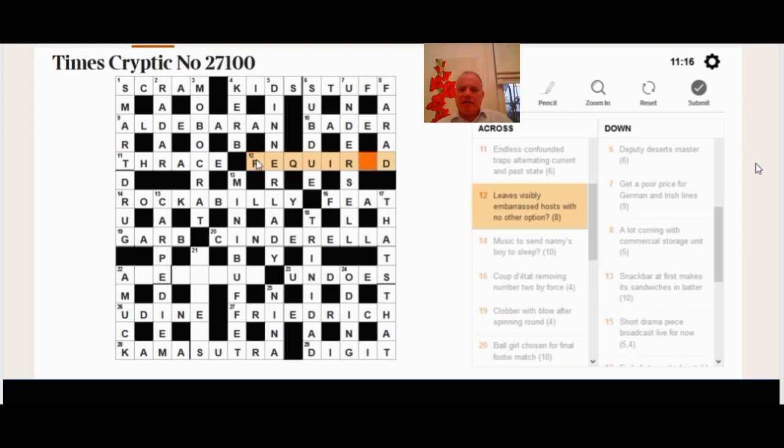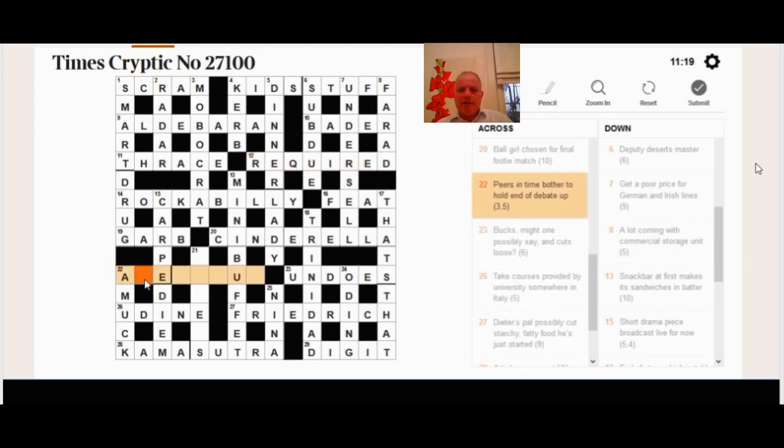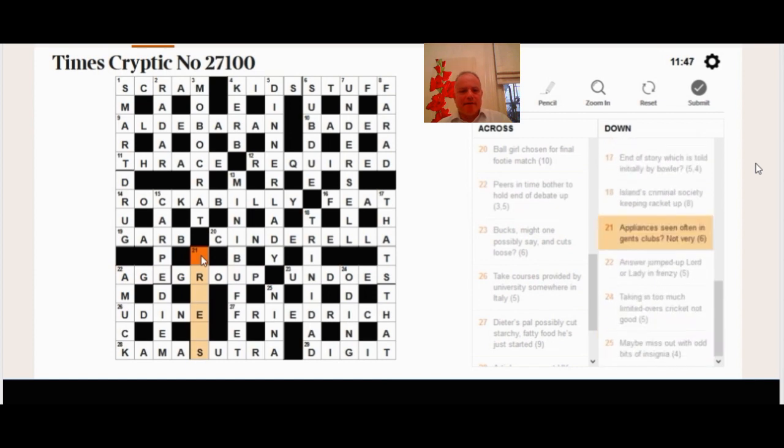So I think I can eventually see required at 12 across. Now, 22. Peers in time. The people who are equal to you in terms of the time that they've lived, your peers in time, are your age group. So there, that's... And the bother is aggro, holding E, the end of debate. And then the word up at the end, age group. Fantastically worded clue. And yet it reads just like a House of Lords reference. Peers in time, bother to hold end of debate up.